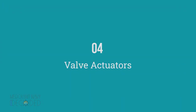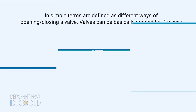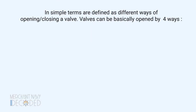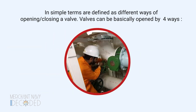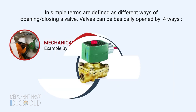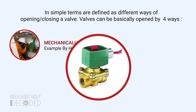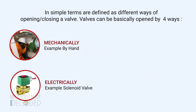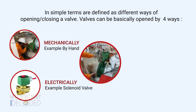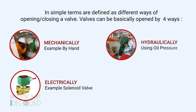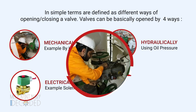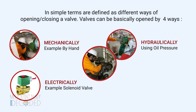Valve actuators, in simple terms, are defined as different ways of opening or closing a valve. Valves can basically be opened by four ways: mechanically, for example by hand; electrically, for example a solenoid valve; hydraulically, using oil pressure; and pneumatically, using air pressure.